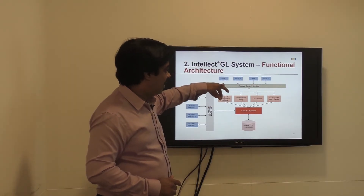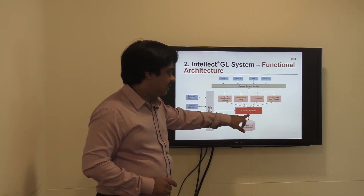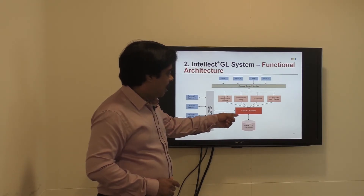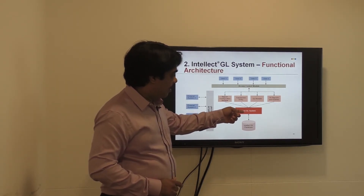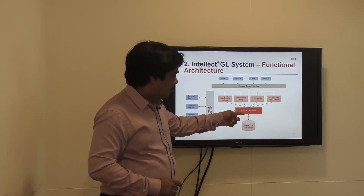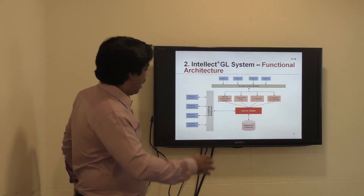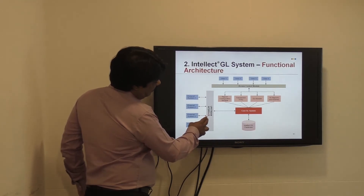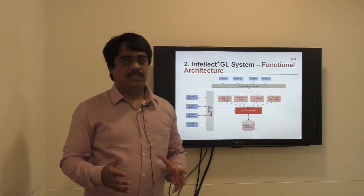Based on the access module, a user will have rights in the transaction, GL, or report module. From there, if he initiates any transaction, it hits the general ledger system. From the general ledger system, if it is a different core banking system, it goes from the core GL system to our GL system. If it is our own system, then the general ledger is inside our system itself.